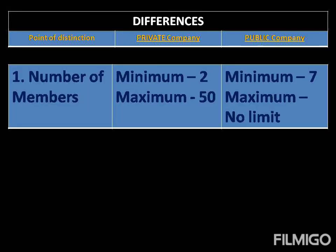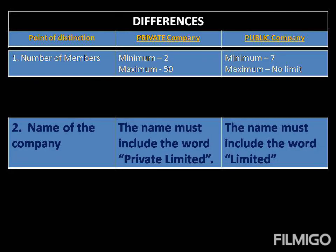The first point of distinction is based on the number of members or shareholders each can have. A private company can have a minimum of 2 and a maximum of 50. On the other hand, a public company can have a minimum of 7 and the maximum number is unlimited.